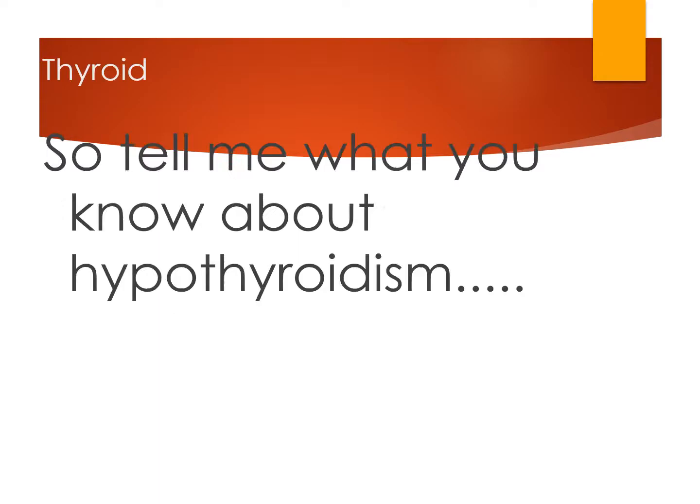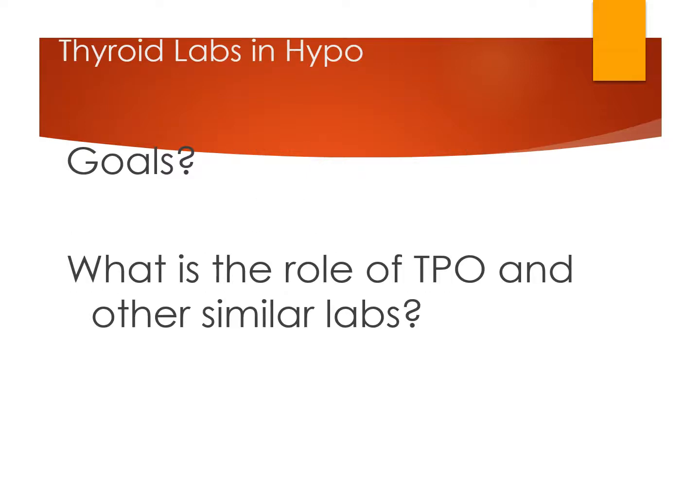So thyroid. First thing you should always do whenever you approach any of these topics is think about what you already know. The challenge is that many people have experience with hypothyroidism — you can use that to your advantage, but be careful to overgeneralize. So what labs do we use? Basically we check the TSH, which is the core of trying to figure out if someone is hypo or hyperthyroid. We usually do this when patients have complaints of fatigue, hair loss, constipation, palpitations, or any of the signs of either hypo or hyperthyroidism.